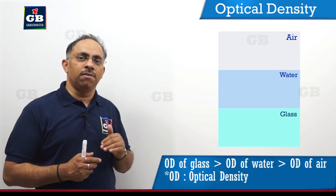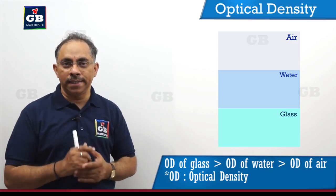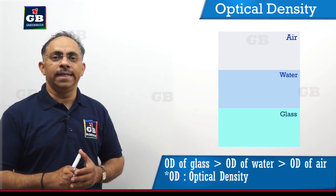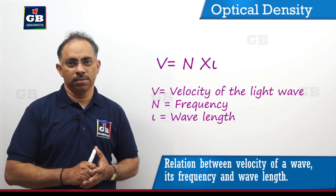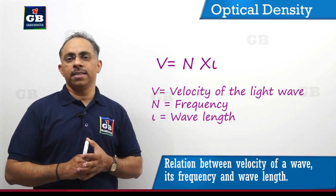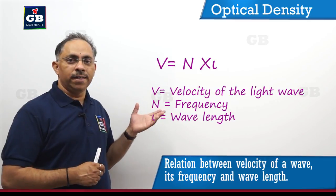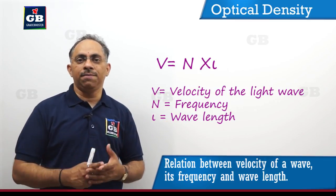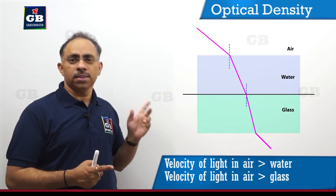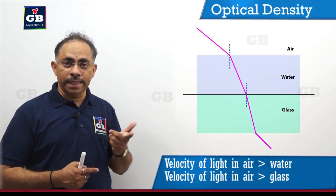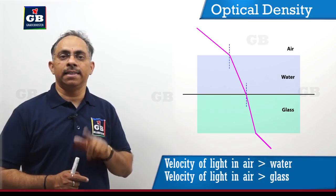When a light ray is traveling from one medium to another, why is it bending? What is changing because of the change in optical density? Actually, it is the speed of light which is changing. When I consider light in the form of waves, there is an expression for the relation between velocity of a wave, its frequency, and its wavelength, given by v = nλ, where v is the velocity of light waves, n is its frequency, and λ is its wavelength. The velocity of light in air is greater than that in water, and similarly, velocity of light in air is greater than that in glass.